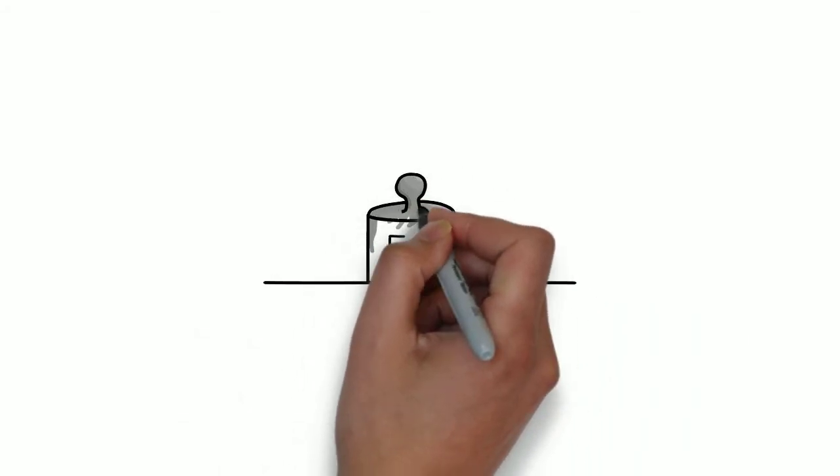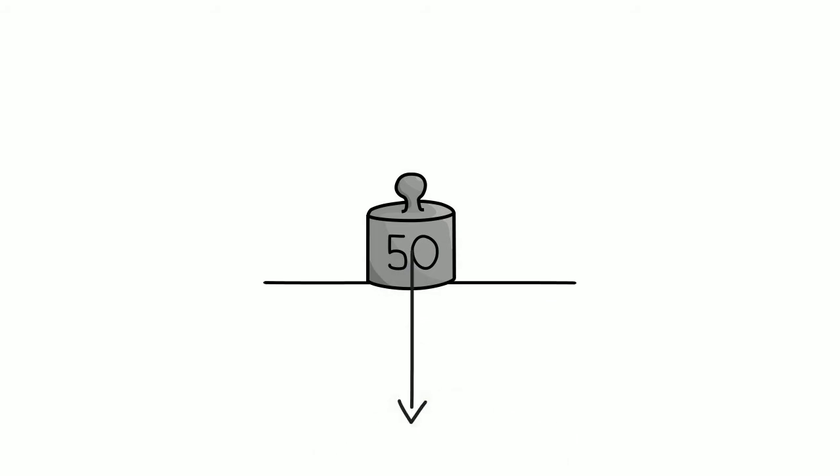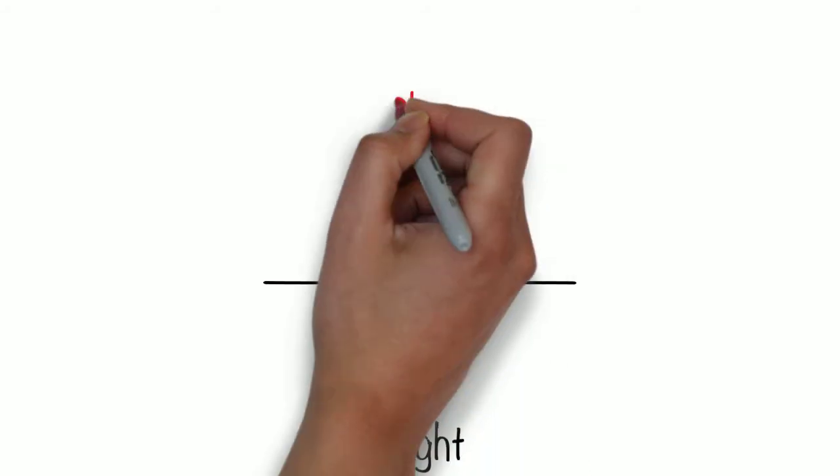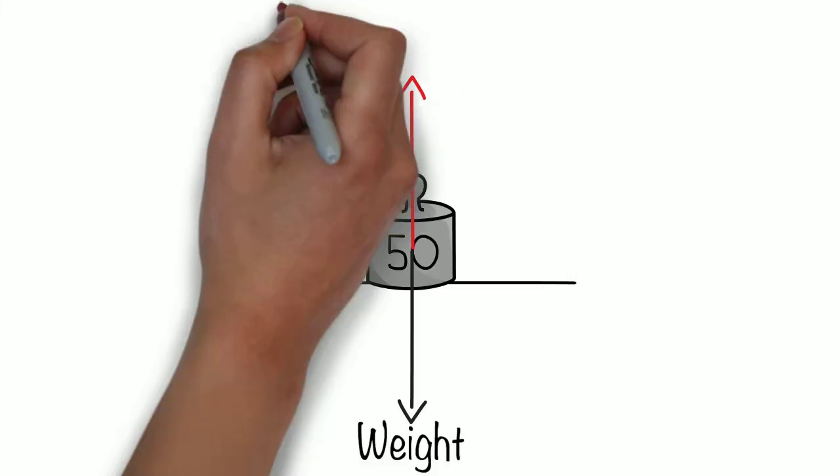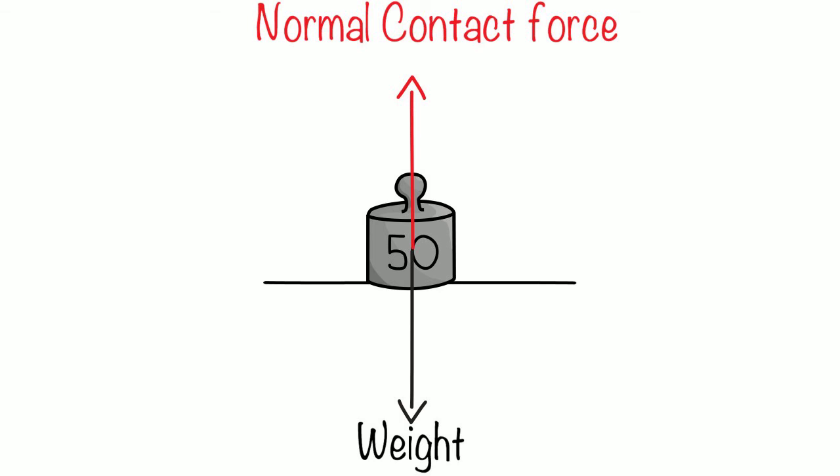I better explain what we mean by the normal contact force. The normal contact force is what happens when an object is in contact with a surface. For example, when you stand on your floor, your weight pushes on the floor with a force. The floor pushes back with an equal and opposite force. That is called the normal contact force.